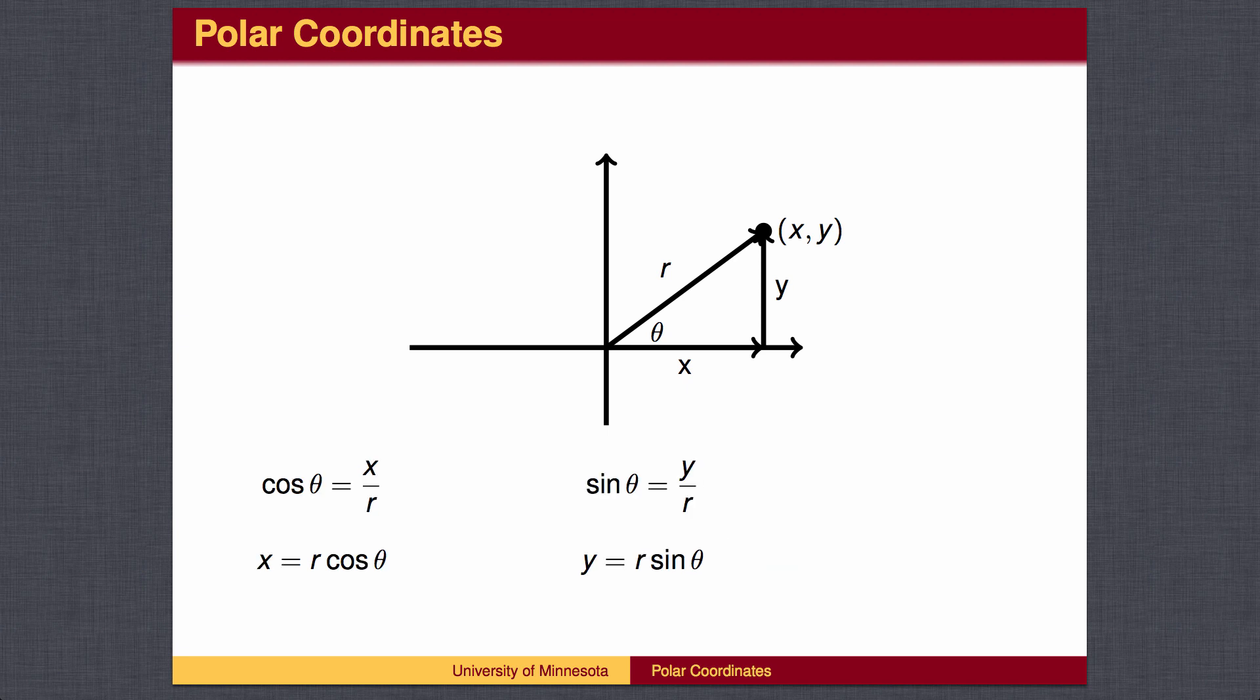To go in the opposite direction, we wish to find x and y if we know the length and direction. We know that the cosine of theta is x over r, and the sine of theta is y over r, so x equals r times the cosine of theta, and y equals r times the sine of theta.